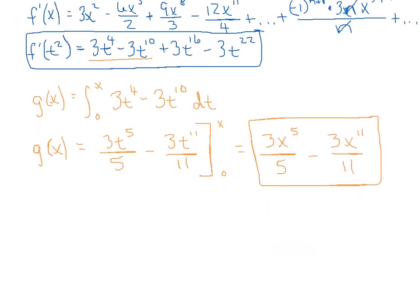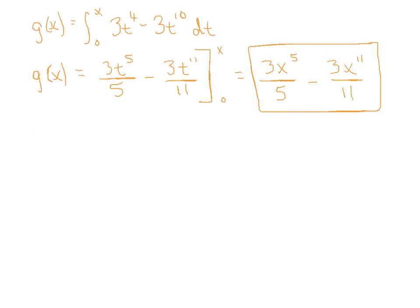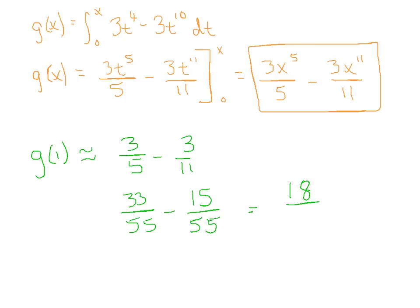And then last but not least, they wanted me to approximate g(1). And we'll say that g(1) is approximately, let's see, 3/5 minus 3/11. Got some common denominators here. So I went with like 33/55 minus 15/55. Let's see, for a final answer of 18/55.